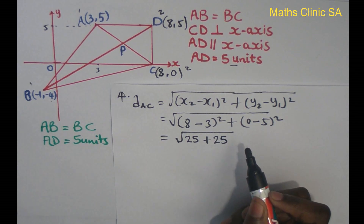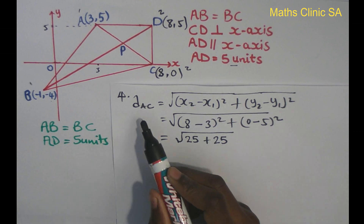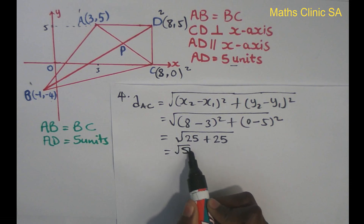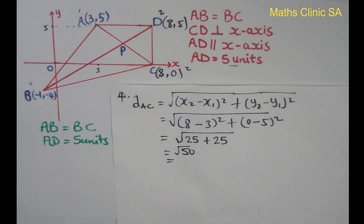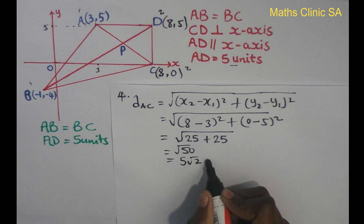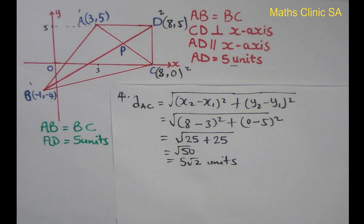Negative 5 times negative 5 is positive 25. So the length of AC is the square root of 50, which simplifies to 5 root 2 units. The remaining distance is 5 root 2 units.